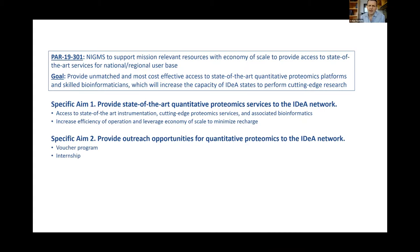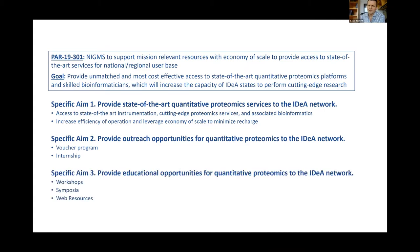The second aim is providing outreach opportunities, and you can learn about all these on our website. We offer voucher programs for people to access proteomics for free — fully subsidized access. We also run internship programs where we bring people on site and show them what it's like to work in a national resource operation. The third thing we do, which is what we're doing today, is providing educational opportunities.